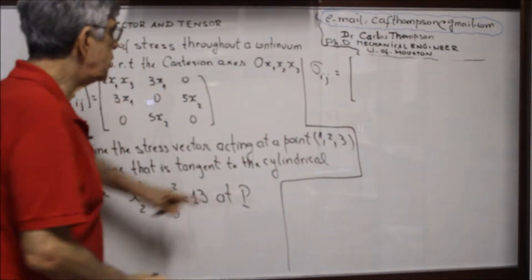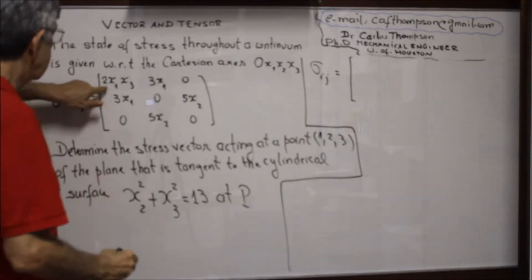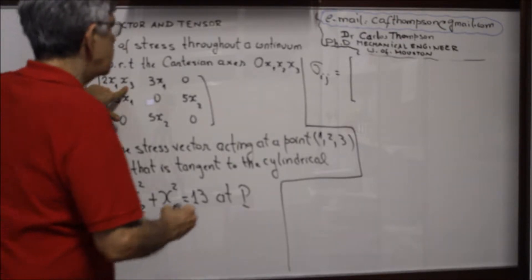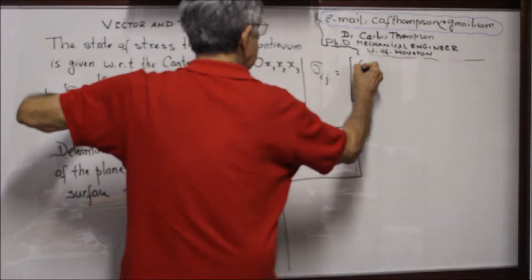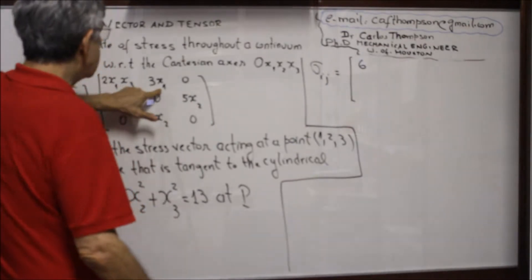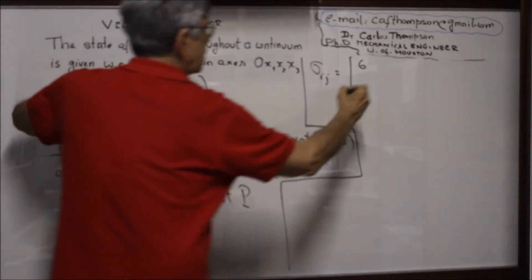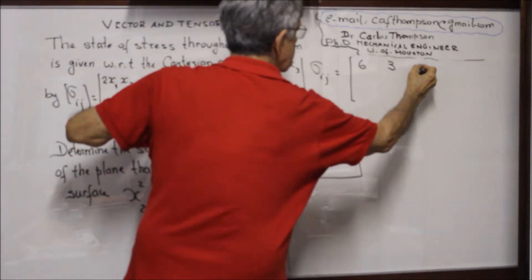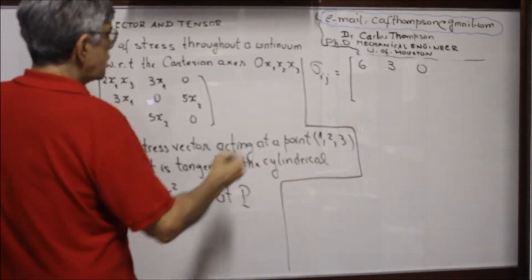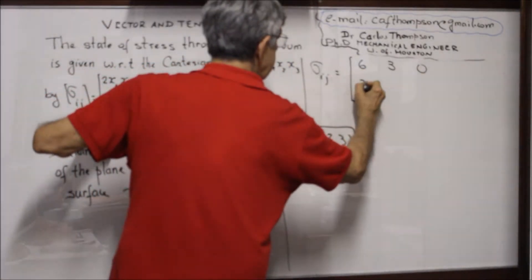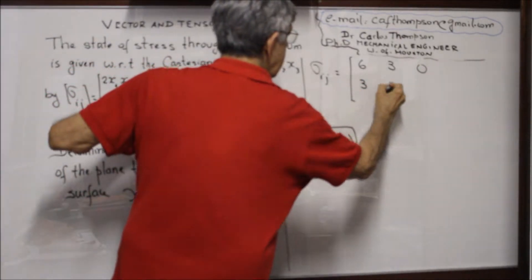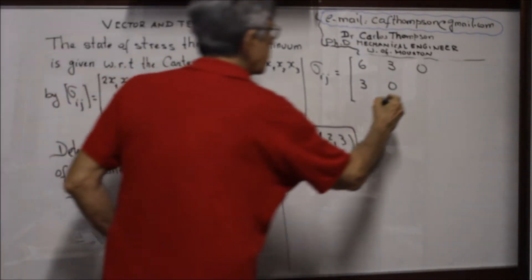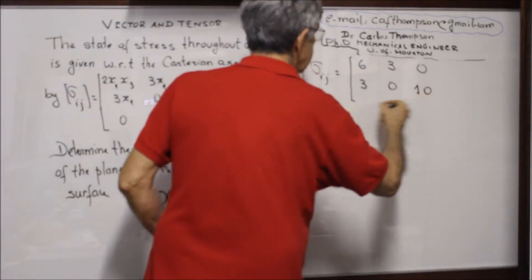The point P is (1, 2, 3). So 2·X1·X3 = 2 times 1 times 3, which gives 6. Now 3·X1: X1 is 1, so this is 3. This is 0. So, since the matrix is symmetric, this entry is also 3. Now X2 is 2, so 5 times 2 is 10.